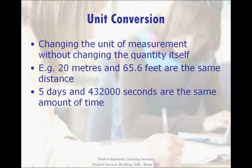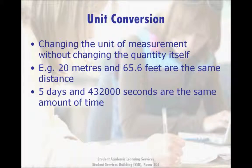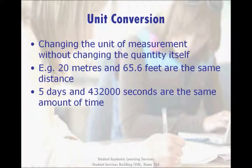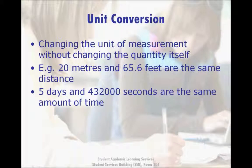In the same way, five days is a measurement of an amount of time which is the same as 432,000 seconds. So if you count out 432,000 seconds on your watch, exactly five days will have passed. The only thing changing is the measurement. This shows one of the main reasons why we do unit conversions: to make a measurement easier to read and understand. It's much easier to understand how much time five days is versus 432,000 seconds, which is not something we use on a day-to-day basis.